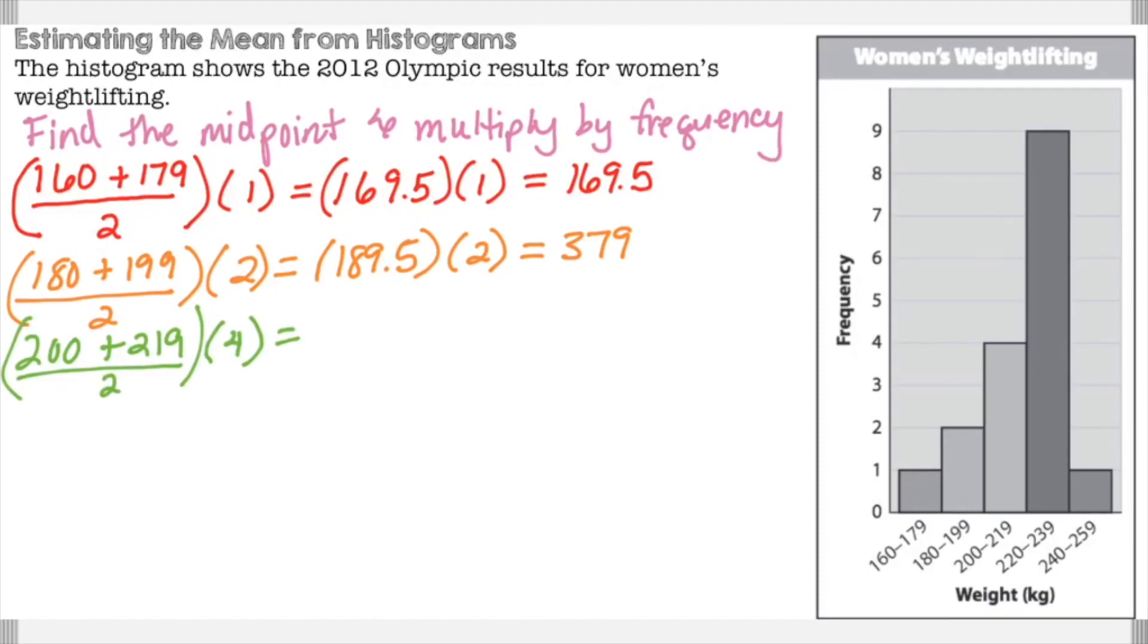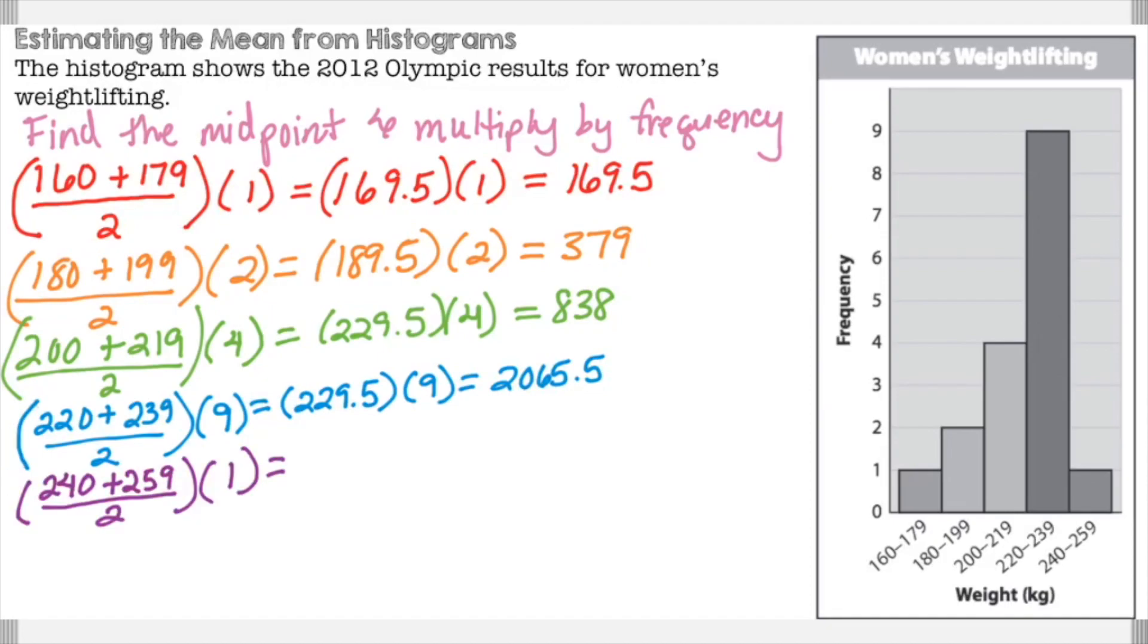Then you just keep going. 200 to 219, frequency is four, equals 838. 220 to 239 divided by two, frequency is nine, multiply by nine equals 2065.5. And then 240 plus 259 is the next range, that only goes up to one, multiply by one keeps it the same, 249.5.